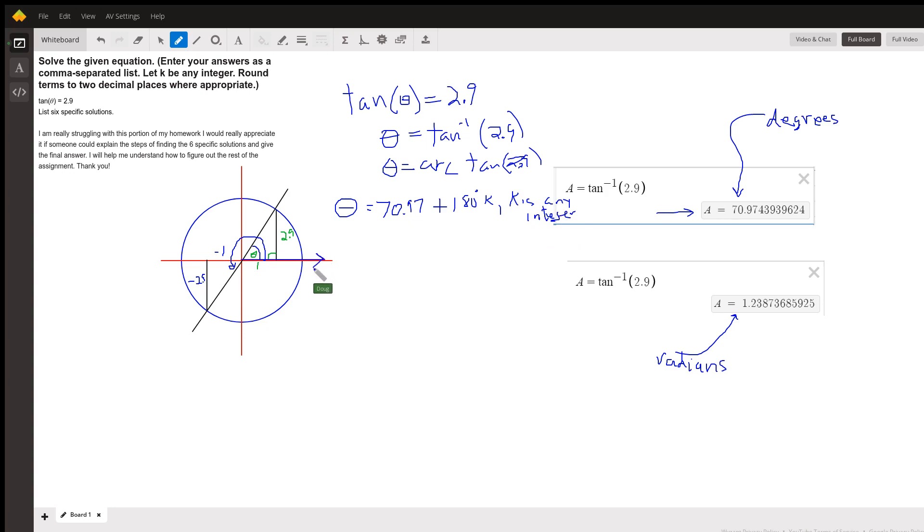either in a positive direction or counterclockwise or this way, as long as you end up on one of these terminal rays, you've got an angle that has a tangent of 2.9.